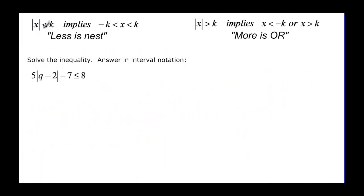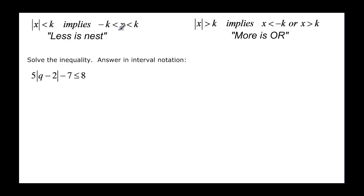If I have an absolute value that is less than some value k, it implies that x is going to be between negative k and positive k. Here's a nice little thing to help you remember: less is nest. It's in between — it's going to be one interval.